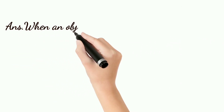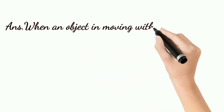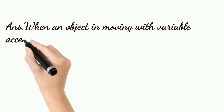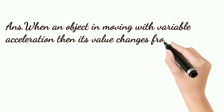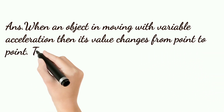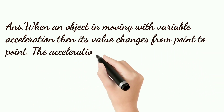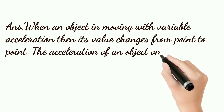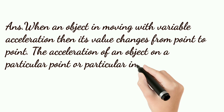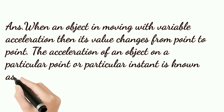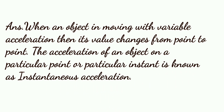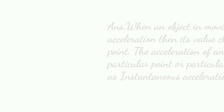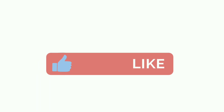Define instantaneous acceleration. When an object is moving with variable acceleration, its value changes from point to point. The acceleration of an object at a particular point or particular instant is known as instantaneous acceleration.